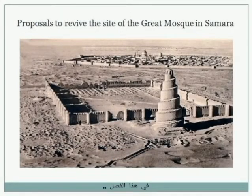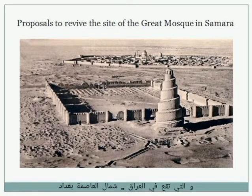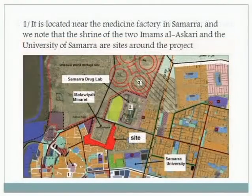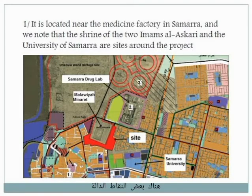In this part we can talk about proposals to revive the site — the Great Mosque in Samara. This city is located in Iraq, north of Baghdad, the capital of Iraq. Located near the Samara Medicine Factory. Some points around Samara include Samara University and some shrines near this site.